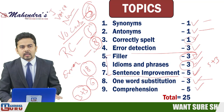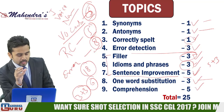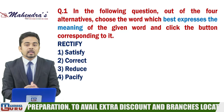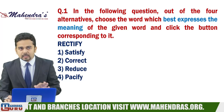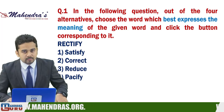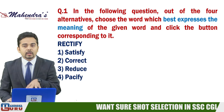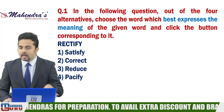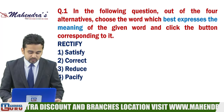Topics clear हो गए। अब देखते हैं candidates की current preparation क्या है। आज 25 questions discuss करेंगे same pattern में - synonym 1, antonym 1, one word substitution 3 - वैसे ही pattern में 25 questions present करेंगे। Speed पर भी focus करेंगे, time पर भी, देखना है कि 25 questions में candidates क्या score करते हैं। 45 plus score करना है तो 25 में से 24 minimum करके आने होंगे।